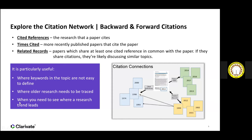Another instance when citation network exploration is useful is when you need to trace older research. For example, a chemistry researcher always looking at chemical compounds needs to trace back into history to find out when a compound was first discovered, to then see all its applications over time. And when you need to see where a research trend leads you — once you've seen its discovery, how it has been applied and its evolution.